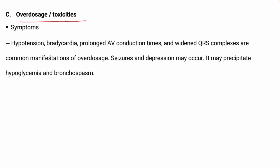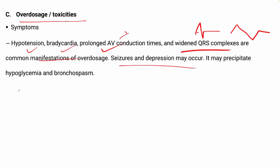In cases of overdose or toxicity of beta blockers, symptoms include hypotension, bradycardia, prolonged AV conduction time, and widened QRS complex on ECG. Common manifestations of overdose also include hypoglycemia and bronchospasm.